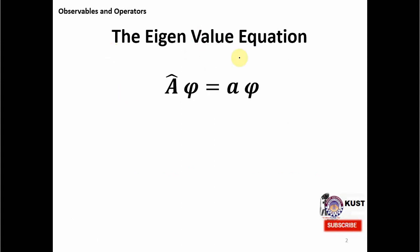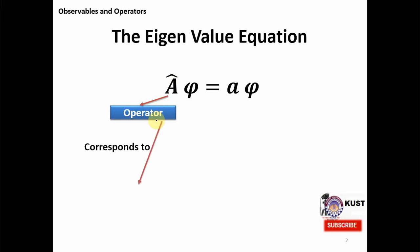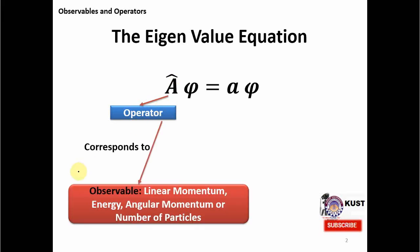Its general form is given as follows, where the first term is actually an operator. You can see a hat symbol on this operator, just to differentiate between its normal quantity and an operator. This operator actually comes from the corresponding observable — for example, linear momentum, energy, angular momentum, or number of particles.